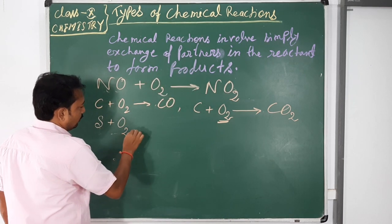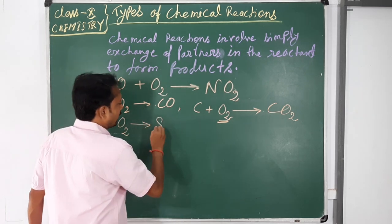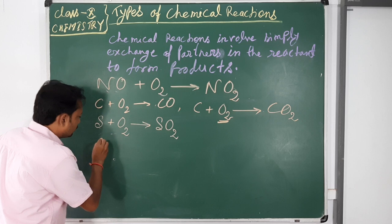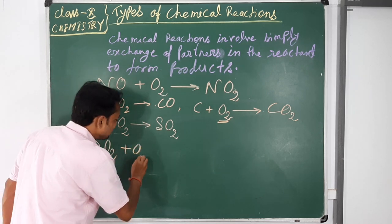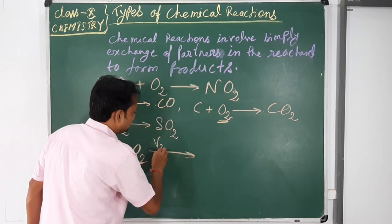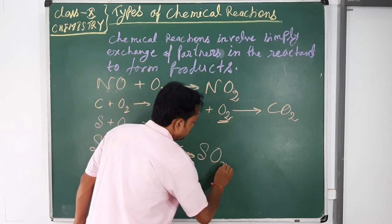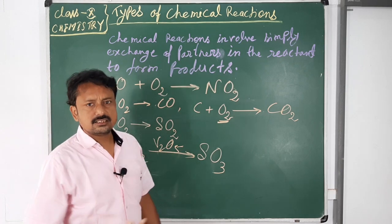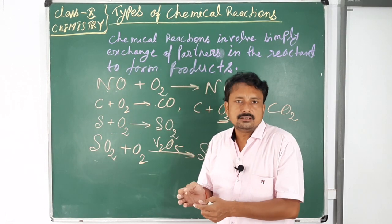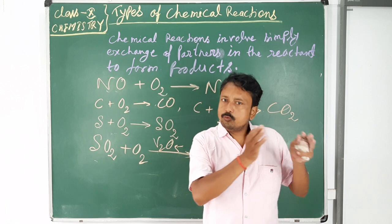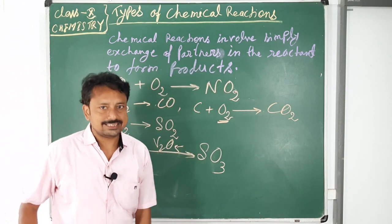Similarly, sulphur reacts with oxygen and forms sulphur dioxide. Sulphur dioxide is further oxidized in the presence of the oxidizing agent V₂O₅ to form sulphur trioxide. In all these reactions, two or more than two reactants combine together and form one new single product, so all of these are examples of combination reactions.